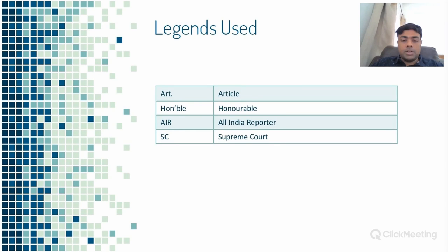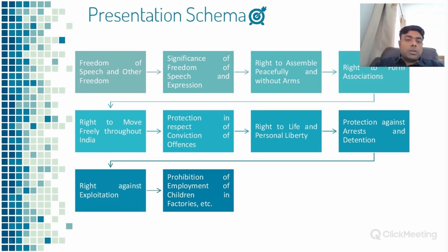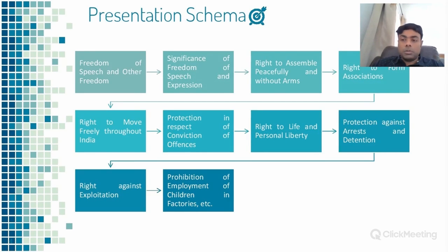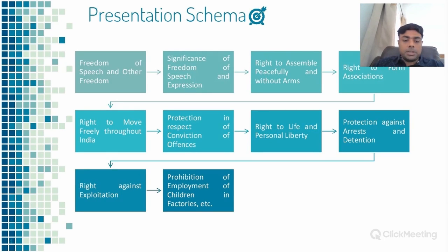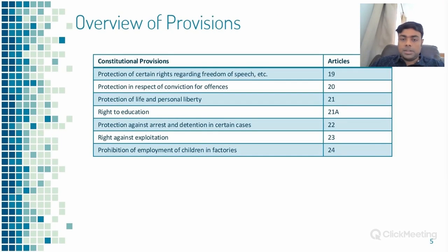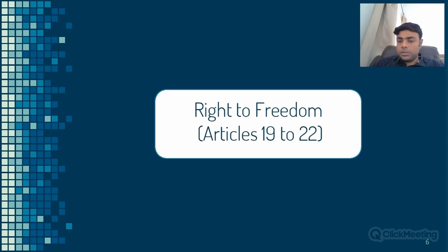Some terms to note: AIR is All India Reporter; the rest are fairly straightforward. The focus today is going to be on freedom of speech and expression, right to assemble peacefully and without arms, right to form associations, right to move freely throughout the country, protection in respect of conviction of offenses, right to life and personal liberty, protection against arrest and detention, protection against exploitation, and prohibition of employment of children in factories and hazardous conditions. This is what is covered between Articles 19 to 24.